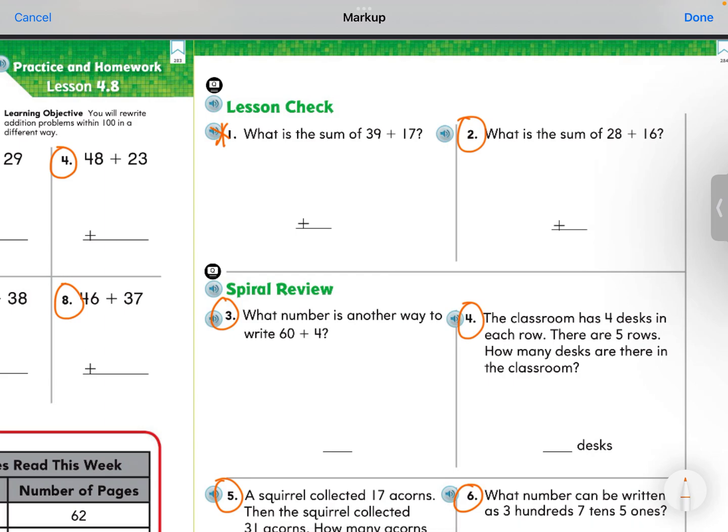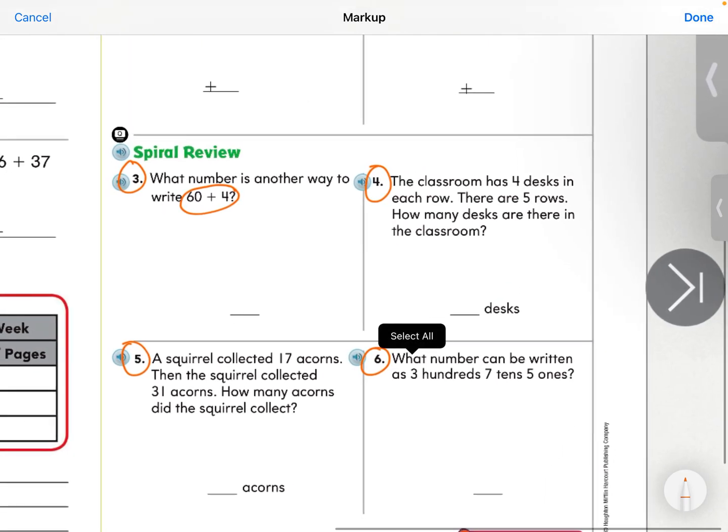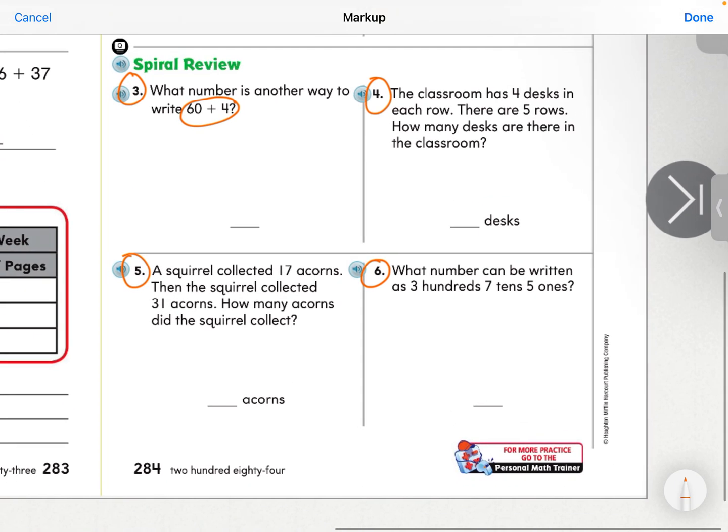On the back side, number 1, what is the sum of 39 plus 17? Line up your tens and ones. Number 2, what is the sum of 28 plus 16? Number 3, what number is another way to write 60 plus 4? Number 4, the classroom has 4 desks in each row. There are 5 rows. How many desks are there in the classroom? Number 5, a squirrel collected 17 acorns. Then the squirrel collected 31 acorns. How many acorns did the squirrel collect? Number 6, what number can be written as 3 hundreds, 7 tens, 5 ones?